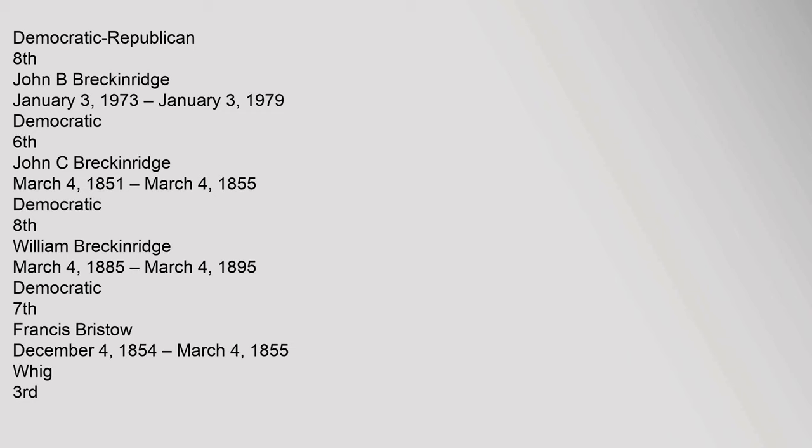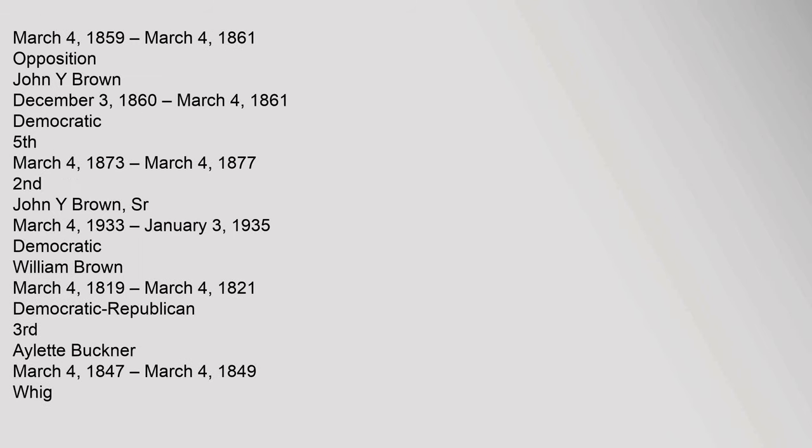William Breckinridge, March 4, 1885 to March 4, 1895, Democratic, 7th. Francis Bristow, December 4, 1854 to March 4, 1855, Whig, 3rd; March 4, 1859 to March 4, 1861, Opposition. John Y. Brown, December 3, 1860 to March 4, 1861, Democratic, 5th; March 4, 1873 to March 4, 1877, 2nd.